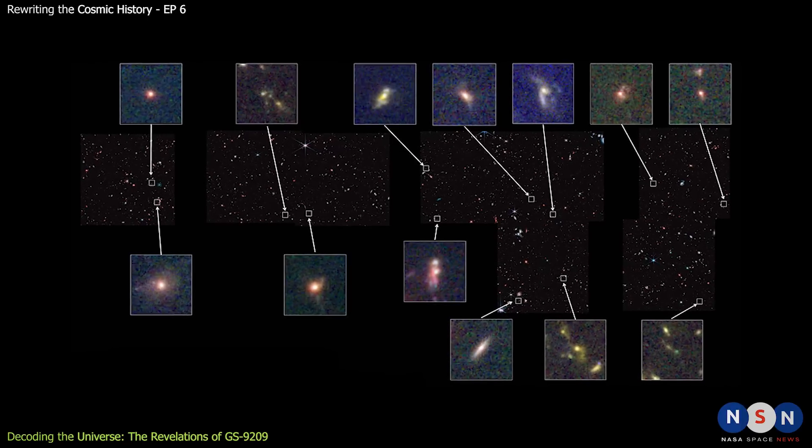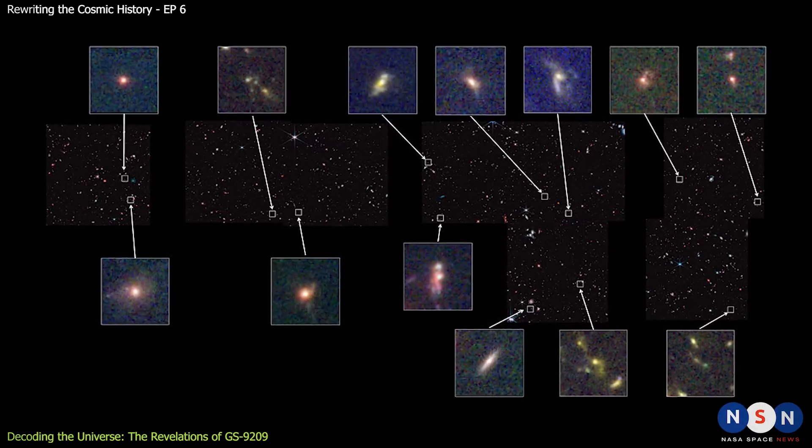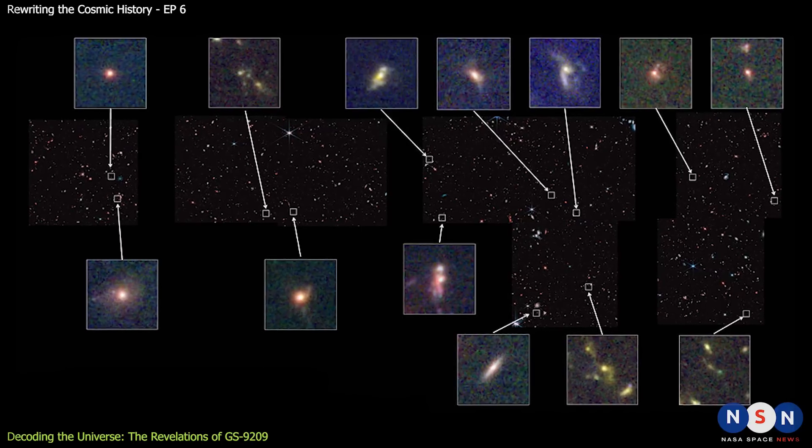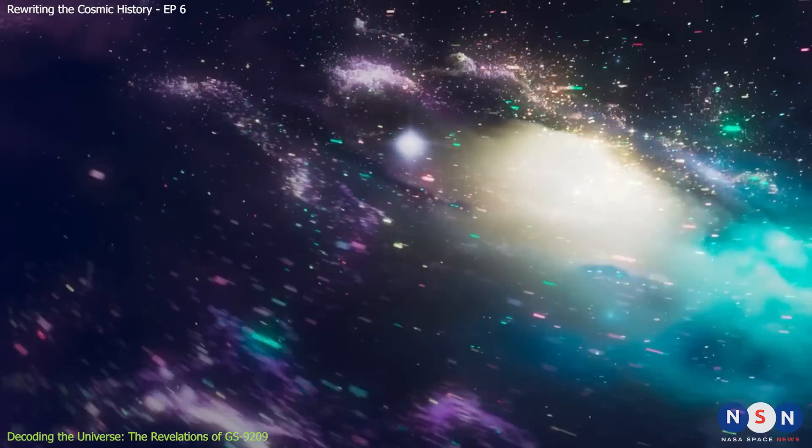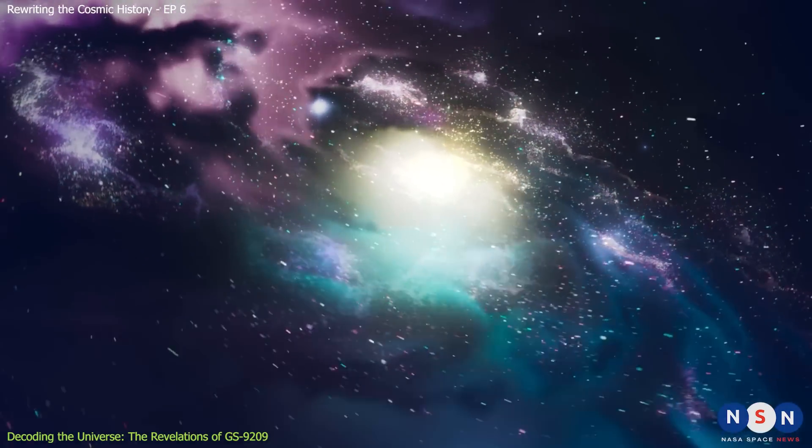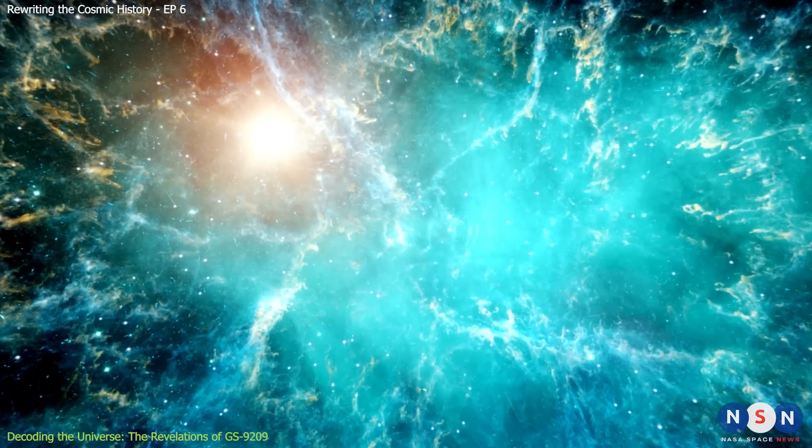This area was chosen because it is relatively empty of bright stars and galaxies in the foreground, which can interfere with the observations of the background objects. By observing this area with James Webb, astronomers can see hundreds of galaxies that formed in the first billion years of the universe.